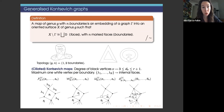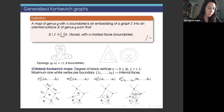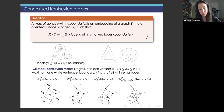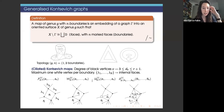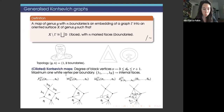Now we define our particular model: generalized Kontsevich graphs, or generalized Kontsevich maps. We consider three types of vertices. Black vertices have degree between 3 and r+1, where r is an integer at least 2. White vertices have at most one per boundary. Square vertices have no degree restriction at all. We consider four sets of such maps.